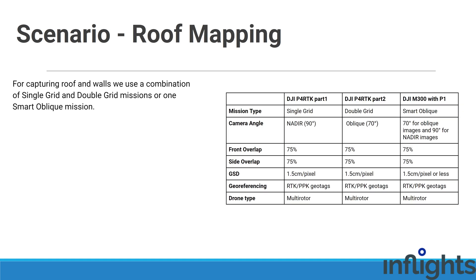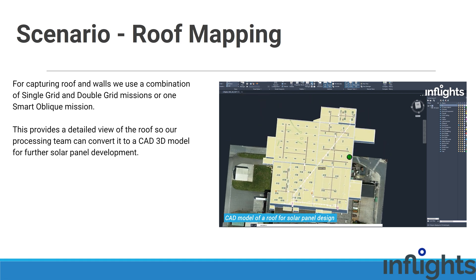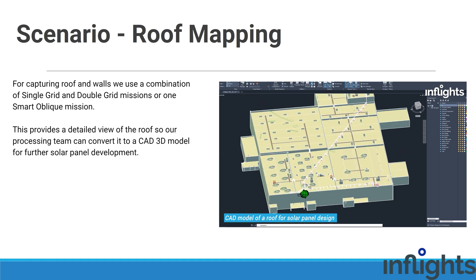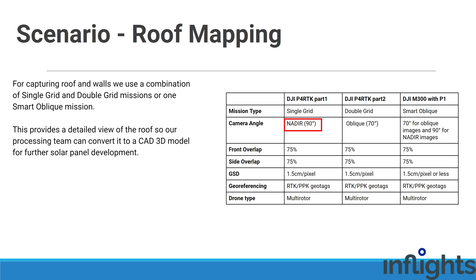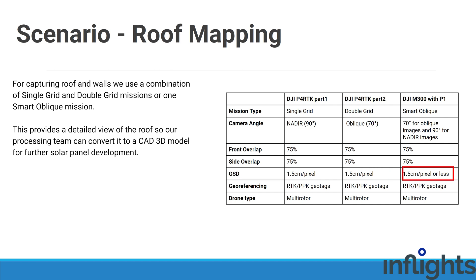For capturing roofs and walls, we use a combination of single grid and double grid missions or one smart oblique mission. This provides a detailed view of the roof so our processing team can convert it into a CAD 3D model for further solar panel development. The camera angle for single grid is 90 degrees and for double grid it is 70 degrees. Front and side overlap for all mission types is 75%. The GSD is around 1.5 centimeters per pixel with DJI Phantom 4 RTK; for Matrice M300 with P1 camera it is less due to flight regulations. For roof mapping projects, relative accuracy is what matters most, so no GCPs are needed if the pilot uses an RTK or PPK equipped drone.